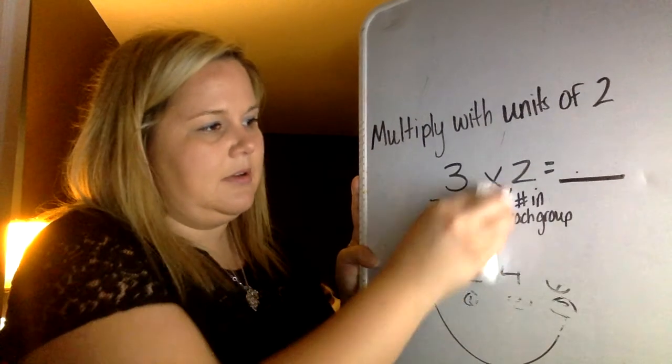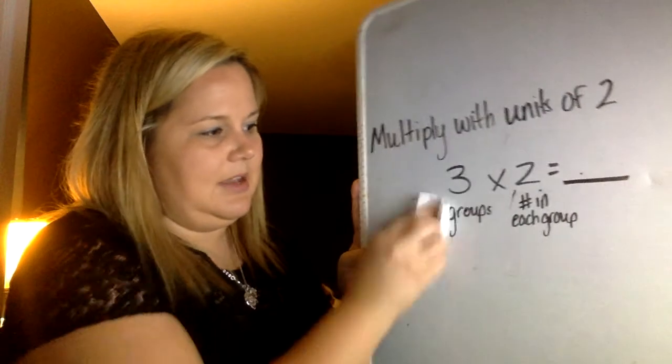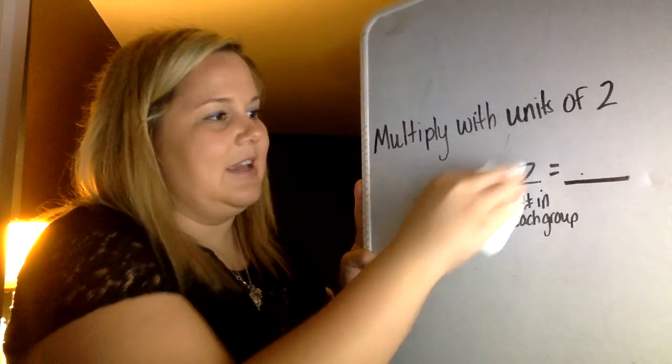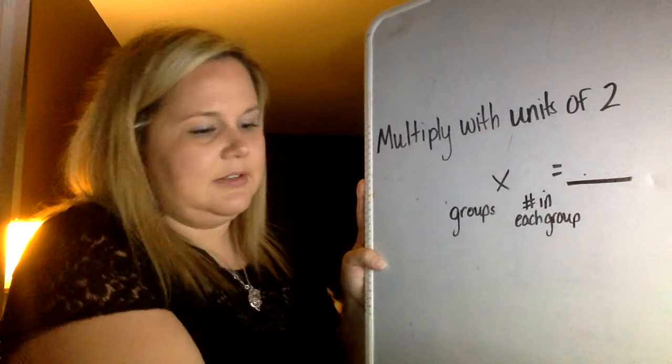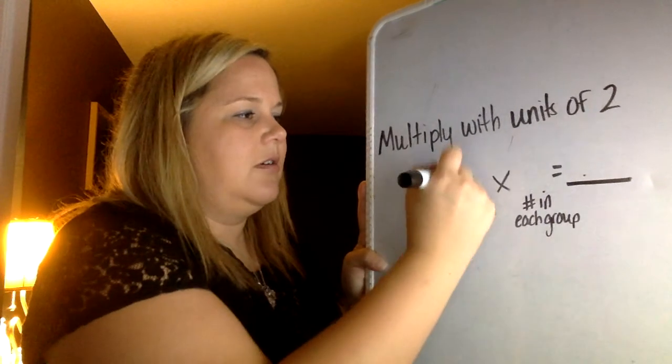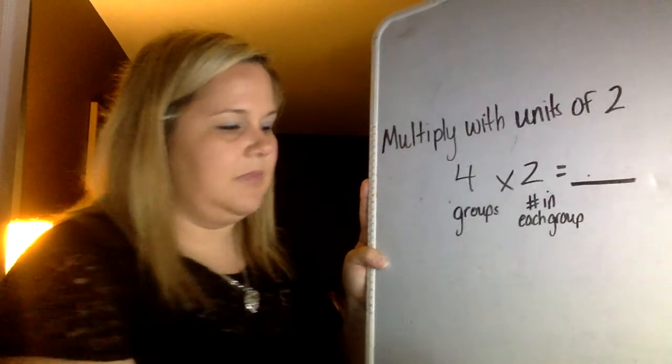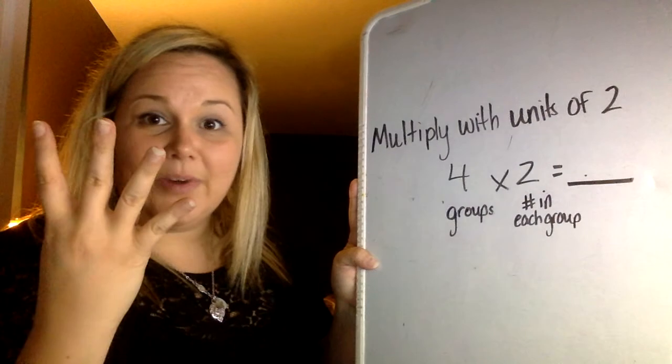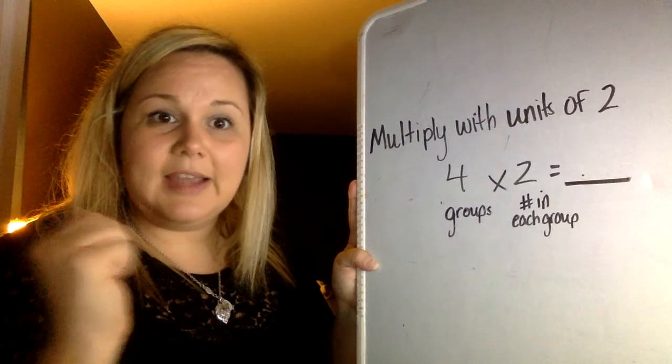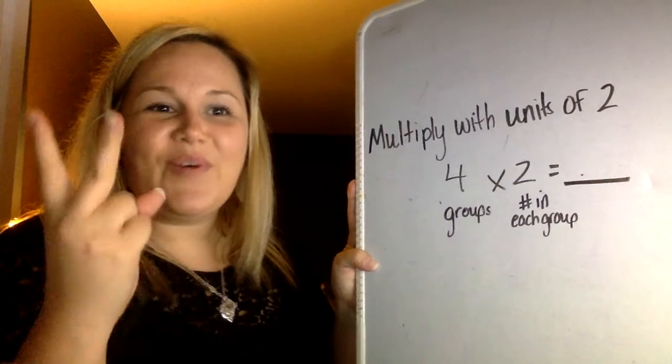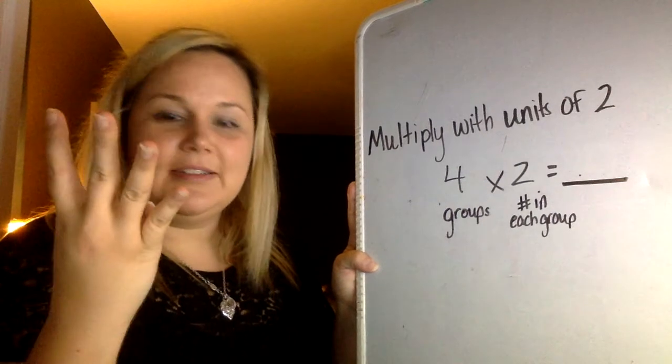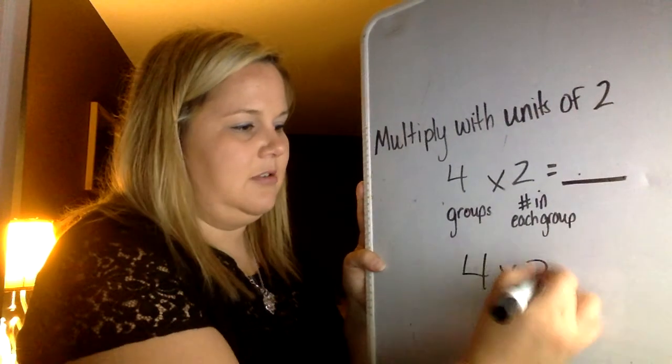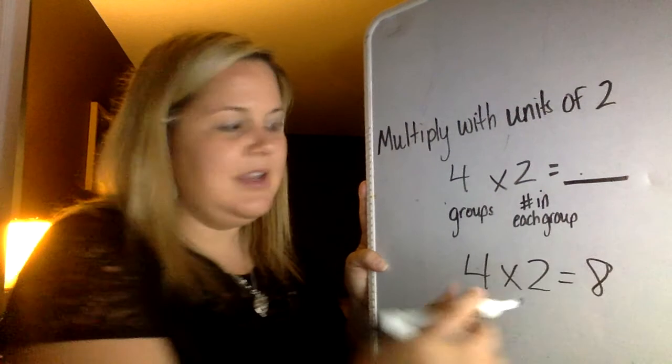So let's do another one. I think you guys might get the hang of this. This is what we're going to practice today for part of our fluency practice. So let's do 4 times 2. I'm going to go until I get 4 fingers up because I'm counting that 2 four times. So ready? 2, 4, 6, 8. So 4 times 2 equals 8.